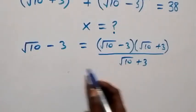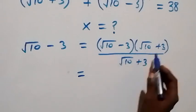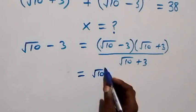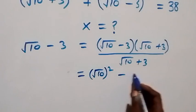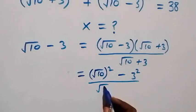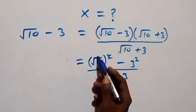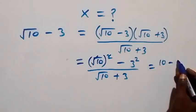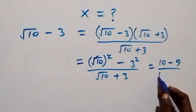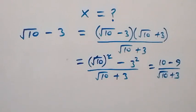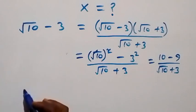Now instead of canceling that, we can multiply this directly and from the conjugate, this is the same thing as (root 10) squared minus 3 squared, divided by (root 10 plus 3). From here, the square cancels the square root and this becomes 10 minus 3 squared — 3 times 3 which is 9 — over (root 10 plus 3). And here 10 minus 9 equals 1.